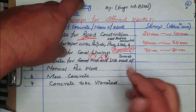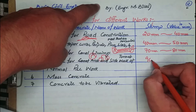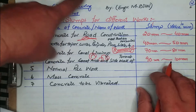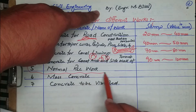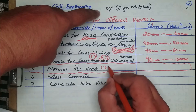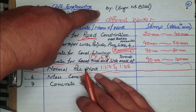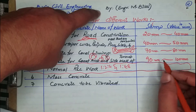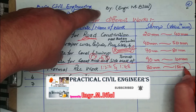The fourth one is concrete used for arches and sidewalls of tunnels, where the slump will be 90 mm to 100 mm. The fifth one is normal RCC work, which is our daily routine work with mixes like 1:2:4 and 1:4:8, and its slump value will be 80 mm to 150 mm.